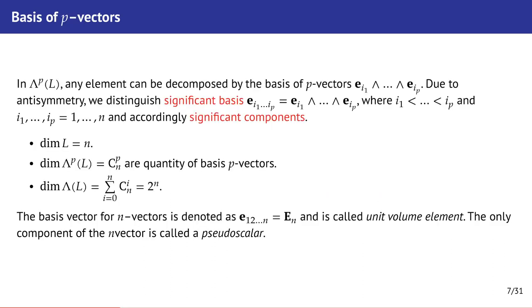The polyvector can be decomposed according to the basis. The basis polyvectors are p-vectors composed of the basic vectors of the space L. For a polyvector there is the maximum rank vector, n-vector. If L space has dimension n then n-vector has only one component and the basis n-vector is only one also and we denote it as en. It is called unit volume element. The only component of n-vector is also called pseudoscalar or anti-scalar.